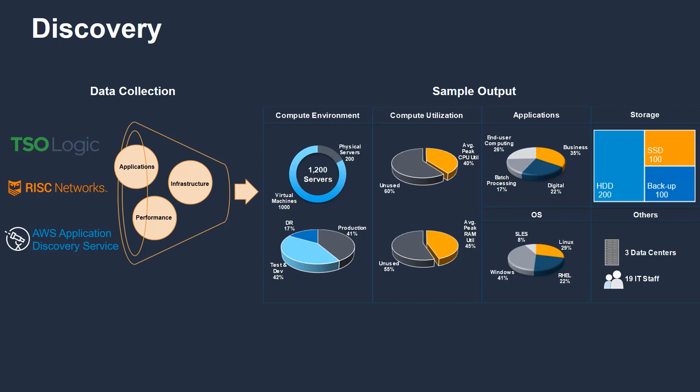As part of this exercise, you will understand how many physical servers you have, how many virtual servers you have, how many of these virtual machines belong to production, and how many belong to test or dev environments. You will also get details around compute utilization — CPU and memory — that allows you to right-size instances on AWS, along with the different operating systems, applications, storage usage, IT staff, and cost of operating in these environments.